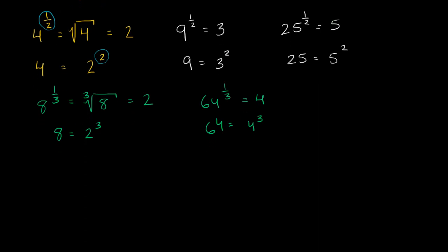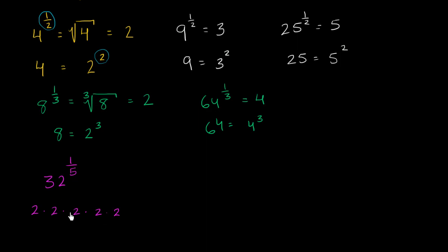So what happens if I were to raise 32 to the 1/5 power? This says: give me the number that if I were to repeatedly multiply it 5 times, I would get 32. Well, 32 is the same thing as 2 times 2 times 2 times 2 times 2. So 2 is that number that if I multiply it 5 times I get 32. So 32 to the 1/5 is 2. Another way of saying this is that 32 is equal to 2 to the fifth power.